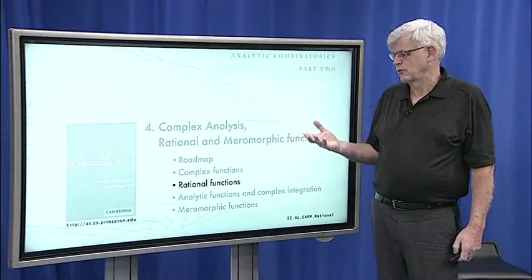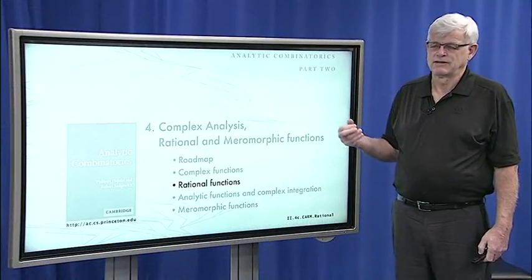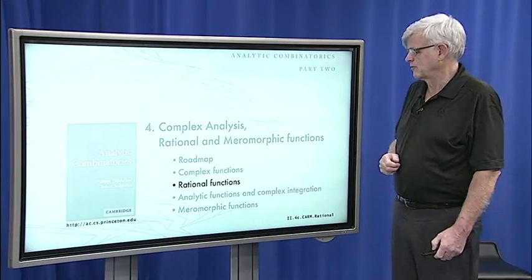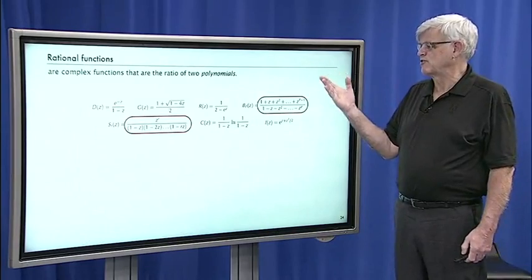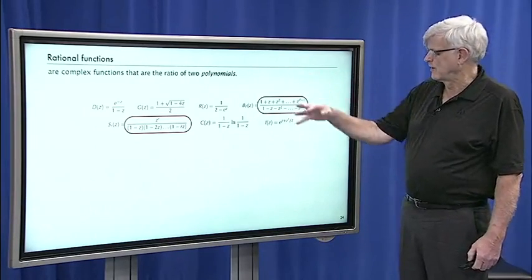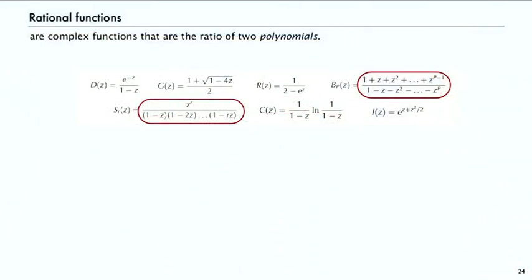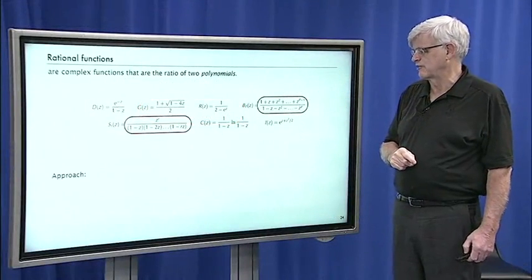The first type of function we're going to talk about is called a rational function, and that actually covers a fair number of the generating functions we've encountered. A rational function is simply a complex function that's a ratio of two polynomials. Some of our examples are rational — like the generating function for the number of strings having no occurrences of p consecutive zeros, and the one for set partitions — while others are not. We'll focus on the rational ones right now.